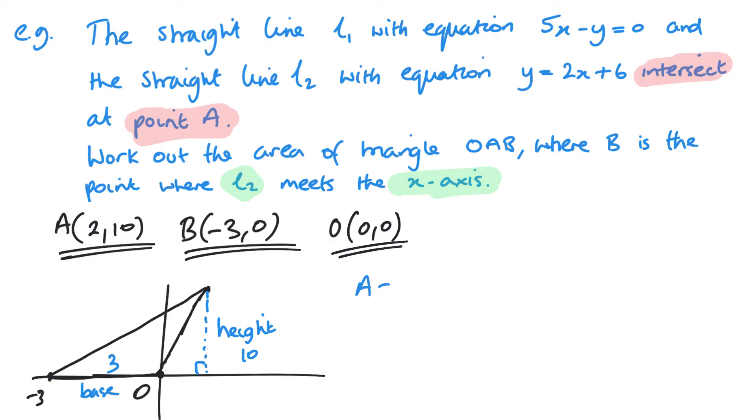So the area of OAB is base times height divided by 2. So we have 3 times 10 over 2 or 15 square units. Hopefully you can see how useful the quick little sketch was to helping me find the area of this triangle and which sides were easy to find and use.